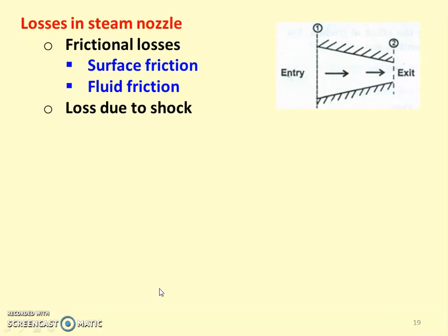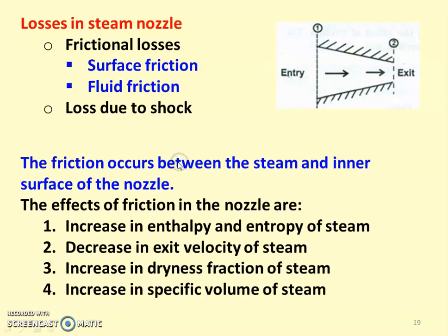There are two types of losses: frictional losses and losses due to shock. Frictional losses include surface friction — between the steam and the internal surface of the nozzle — and fluid friction between layers of the flowing steam. Shock wave losses occur in supersonic flow, particularly in the diverging portion of a convergent-divergent nozzle when the Mach number is greater than 1. The major loss is surface friction between the steam and the nozzle wall.